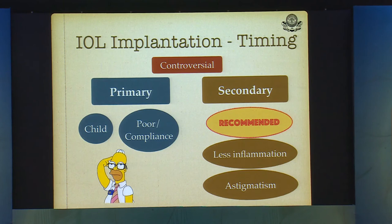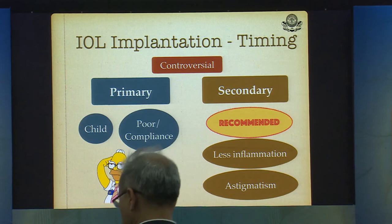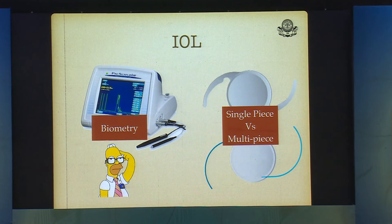Timing is controversial, and multiple approaches are recommended. Primary is generally performed in a child or a poorly compliant patient who would not return for follow-up. Secondary is generally recommended because it allows management of lens inflammation and astigmatism. For biometry, if K readings are unavailable, take an A-scan of the concerned eye and use keratometry readings of the fellow eye. Single-piece IOL in the bag if the capsule is intact; multi-piece IOL if not.